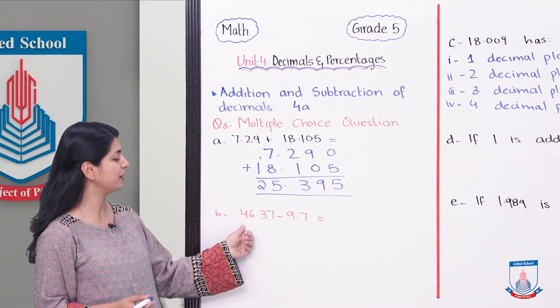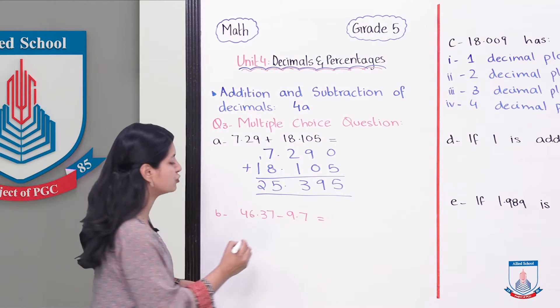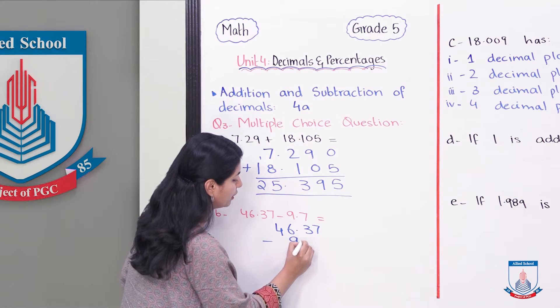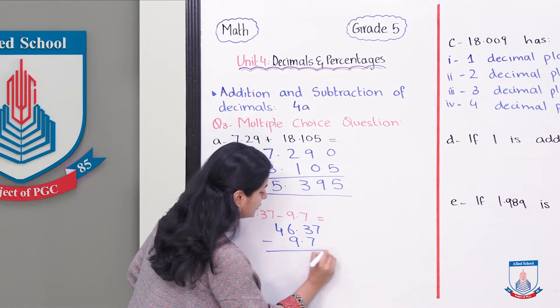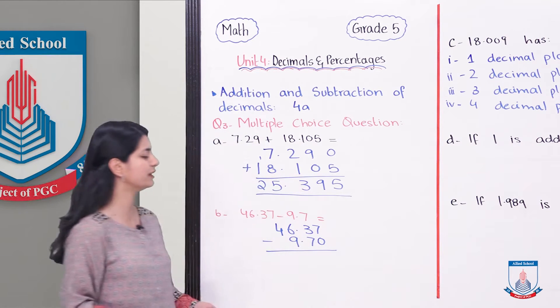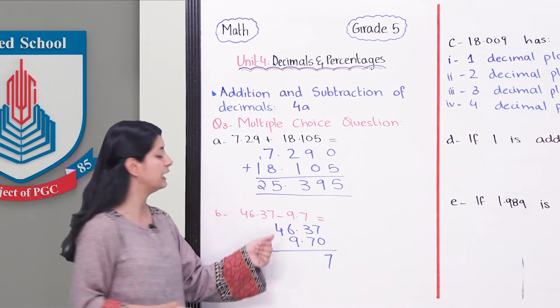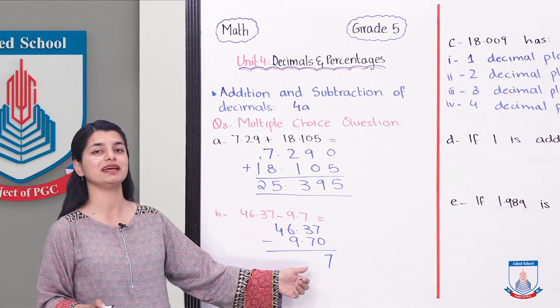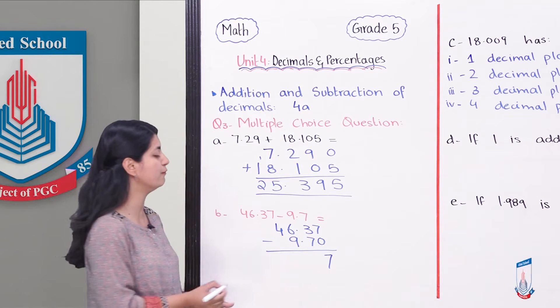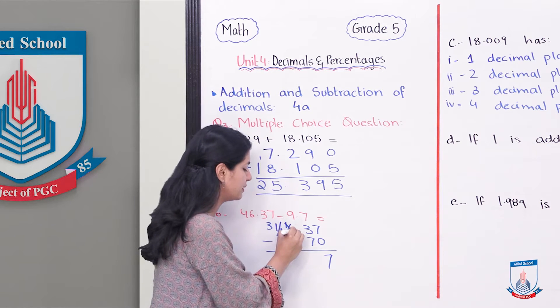If we see part B, 46.37 minus 9.7, we will also write it: 46.37 minus 9.7. We will do the placement. We will subtract. 7 from 0 minus, we can make it 10, so 10 minus 7 is 3. Now we cannot do 7 minus, we will borrow. 6 also cannot do 9, we will borrow from 4. We have made 4, 3. 16. We will borrow again, so 15.